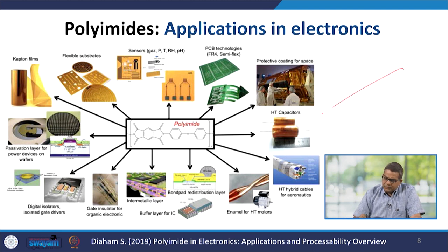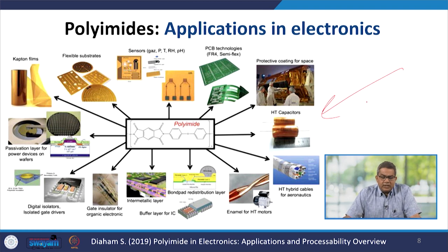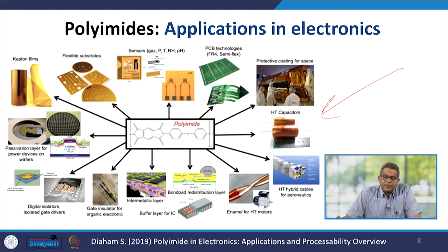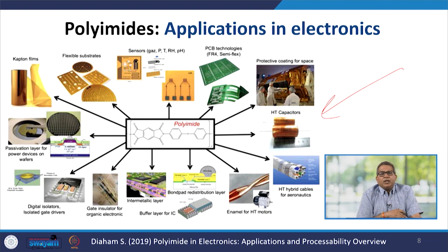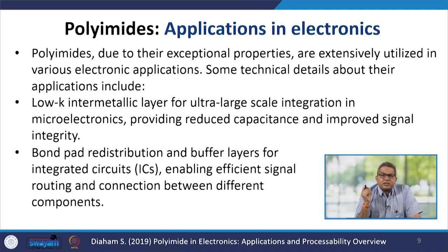Polyimides have a wide spectrum of applications in electronics. Examples include Kapton film, flexible substrates, sensors, PCB technologies, protective coatings for space, and various kinds of digital isolators. Because of their exceptional properties, they are extensively utilized in various electrical applications.